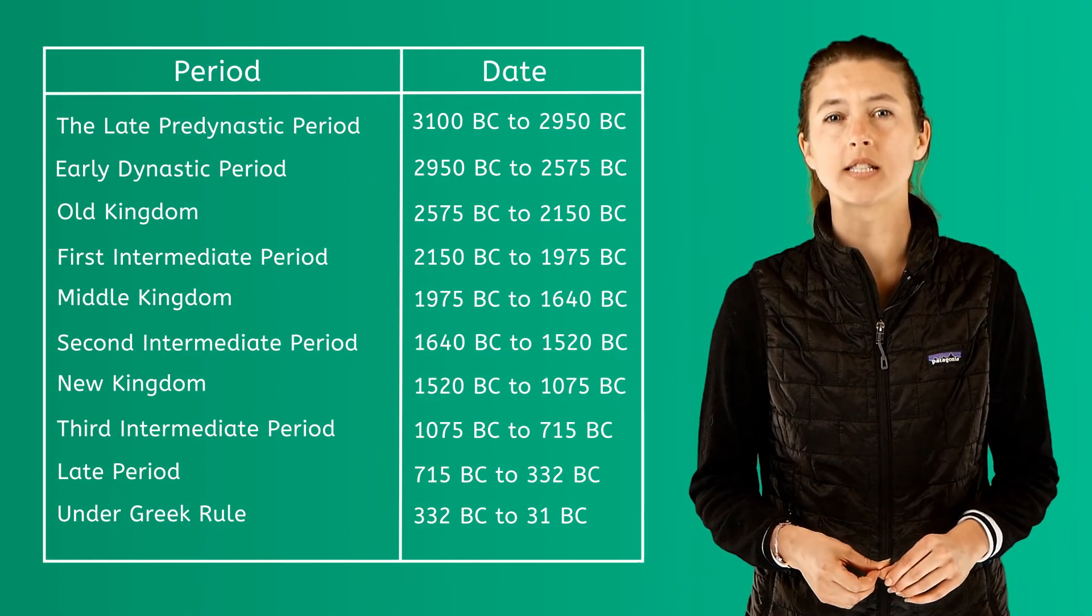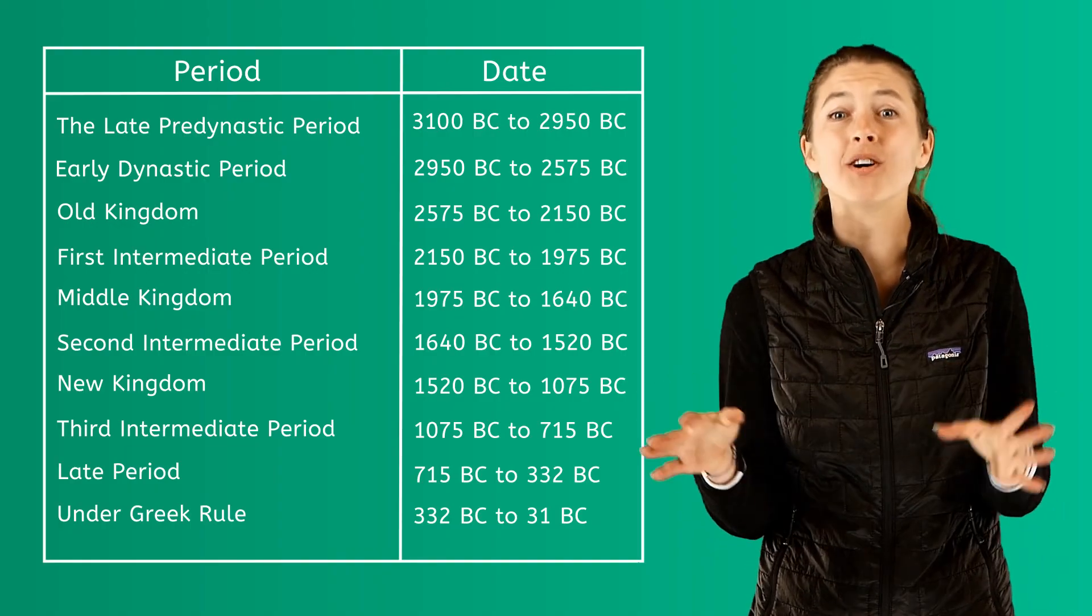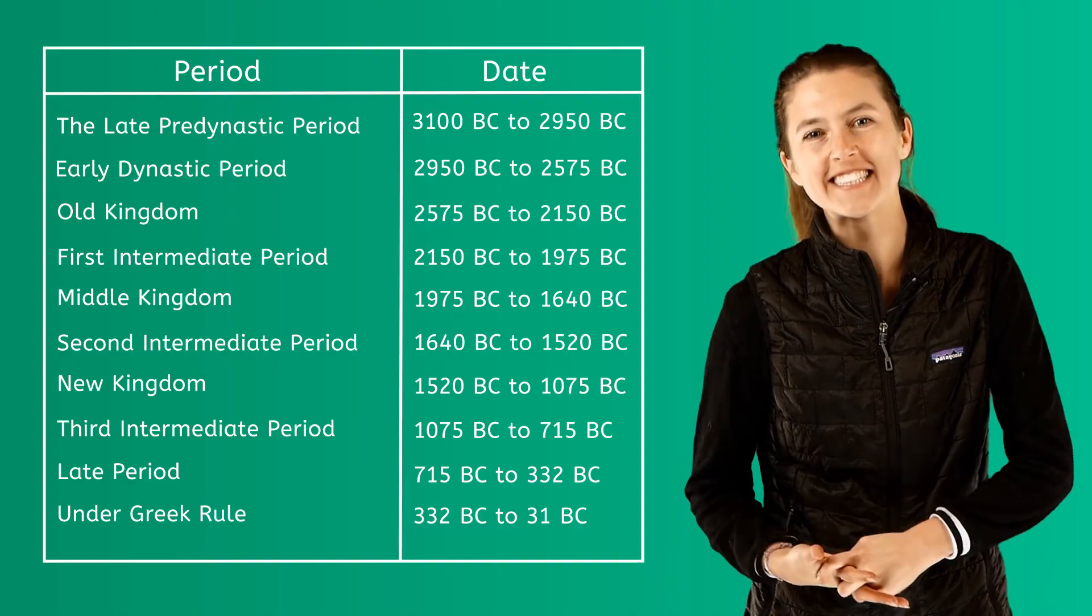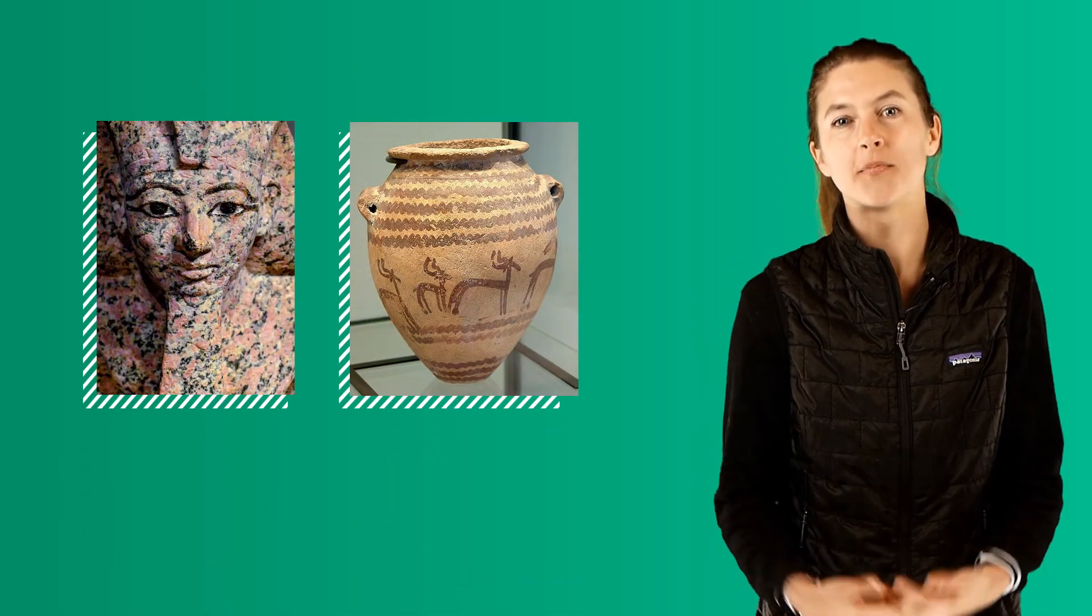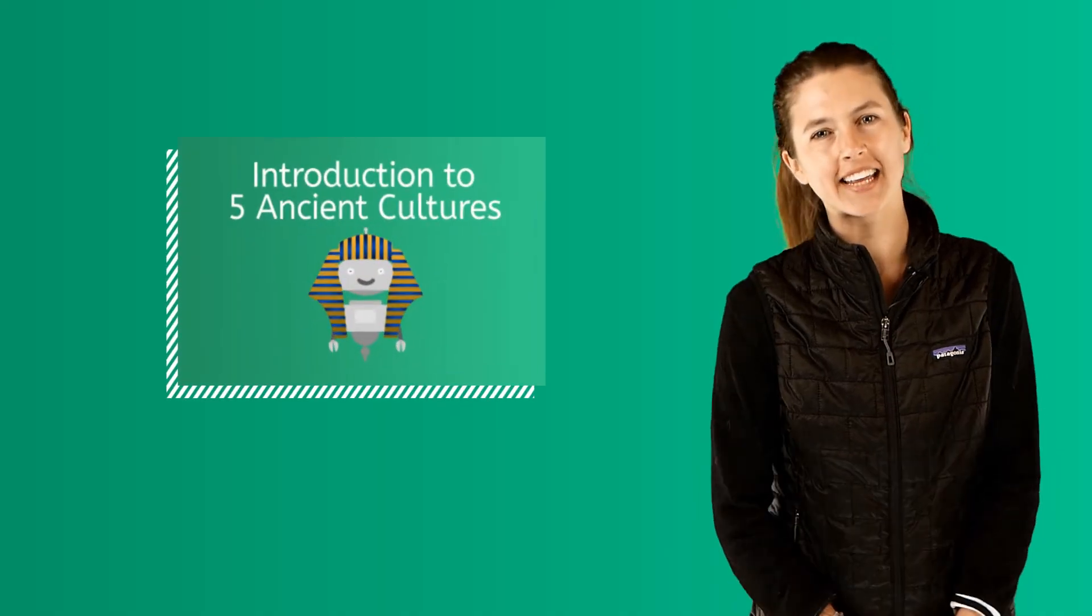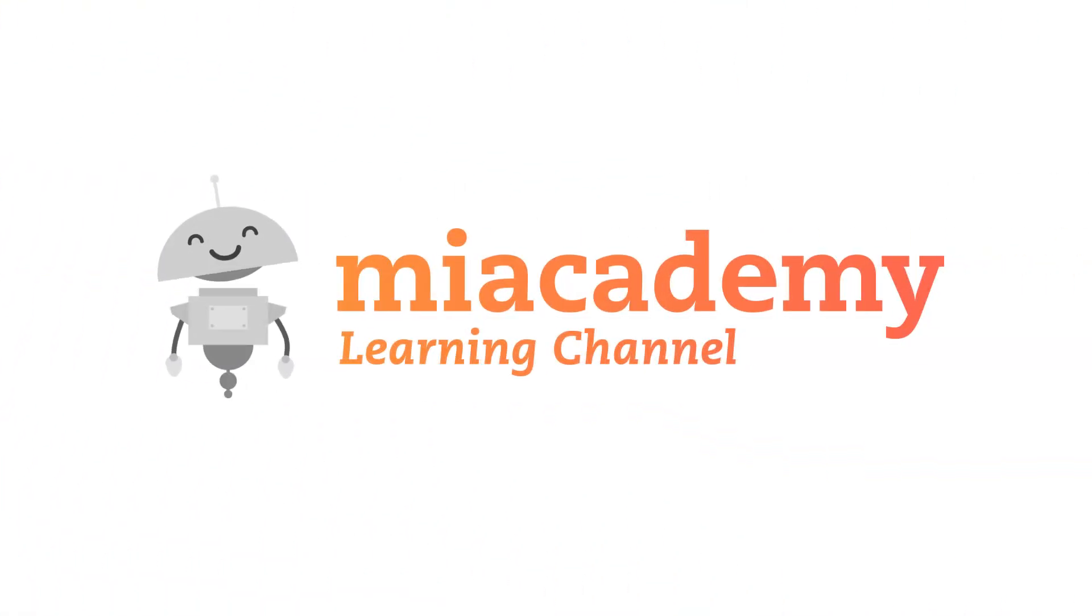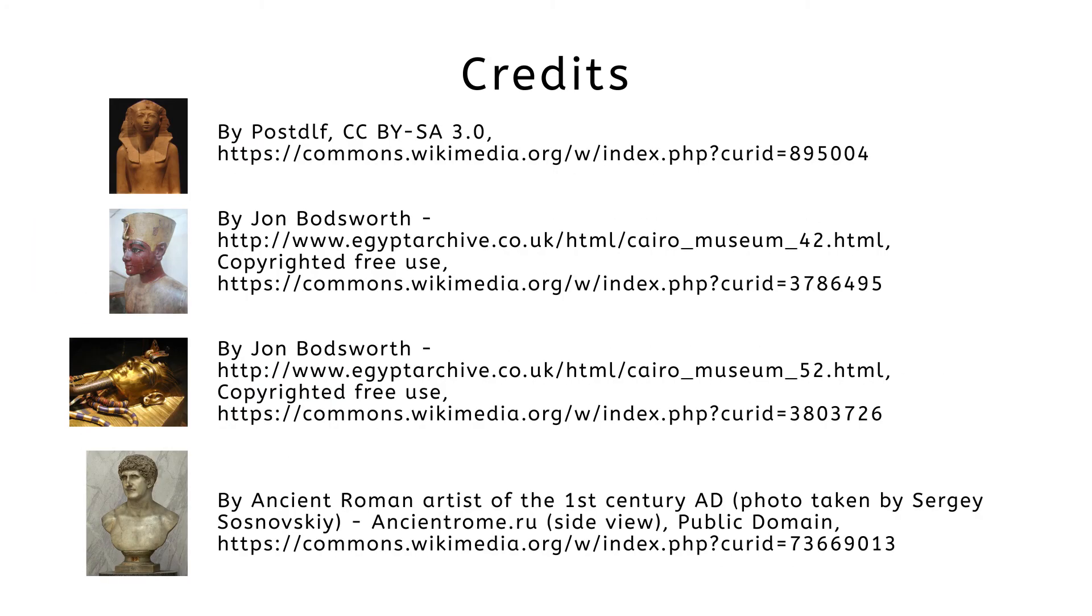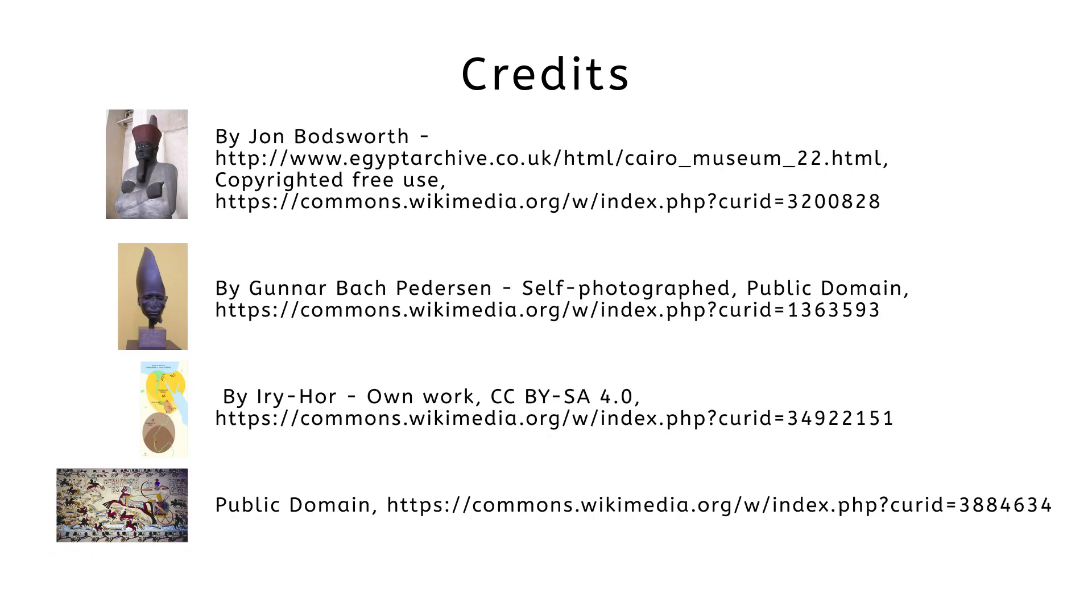Each of these periods can be looked at in terms of a few key people and events. Remember, this is just an overview of this time in history. There are many books, websites, and other materials available for you to research ancient Egyptian history. In part two of this series, we will take a look at ancient Egyptian art and culture. To practice what you've learned, you can play our fun online games and quizzes. Until next time, remember to always be clever. Have a great day!